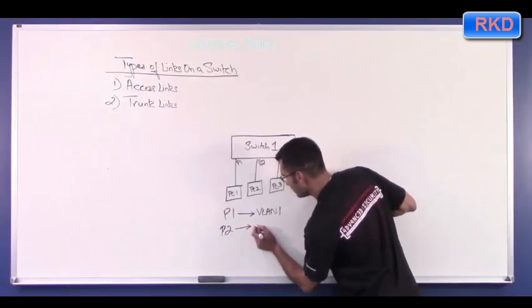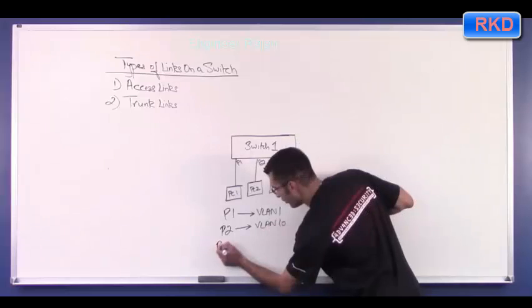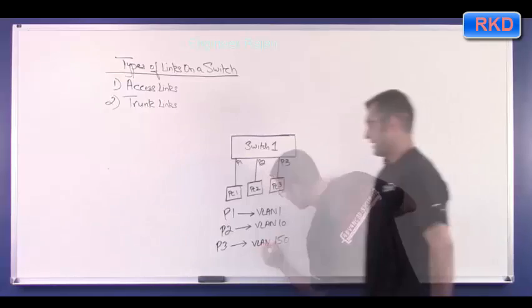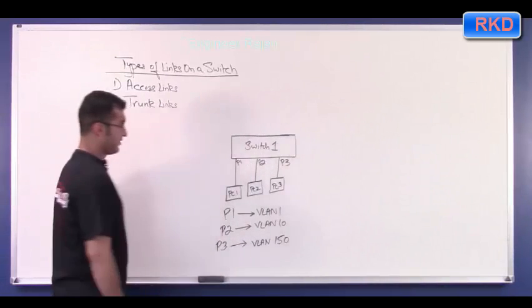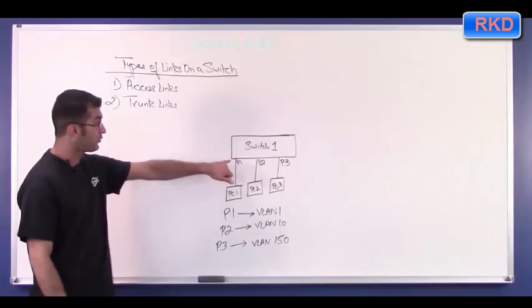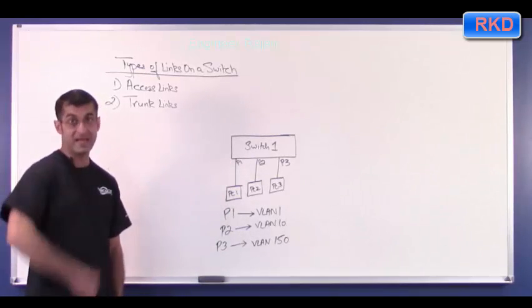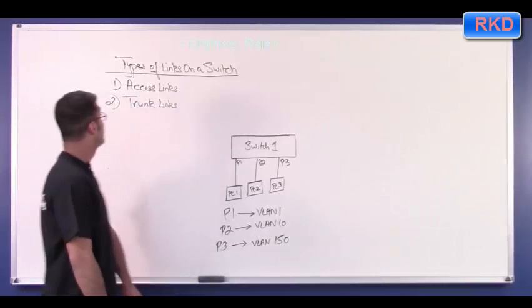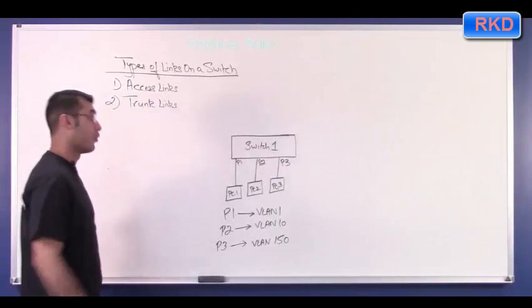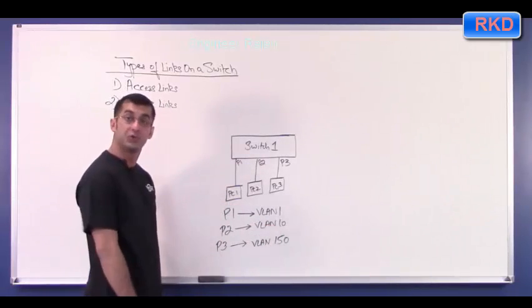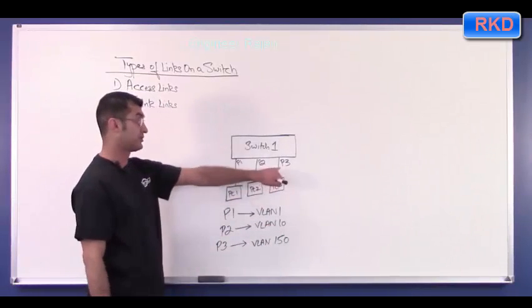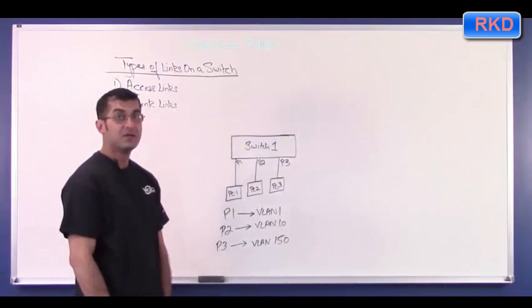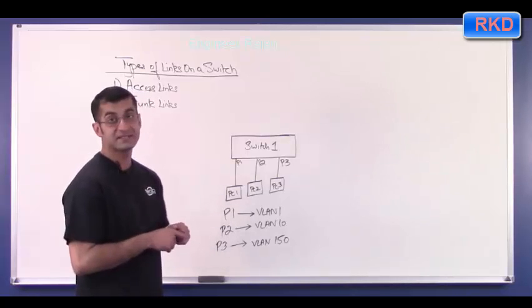So let's say P one belongs to VLAN one, port two belongs to VLAN 10, port three belongs to VLAN 150. If port one belongs to VLAN one, then port one belongs to only one VLAN at a time, which is VLAN one. Port one is going to be an access link, port two only belongs to VLAN 10, port two is an access link, port three belongs to VLAN 150. So port three is an access link.